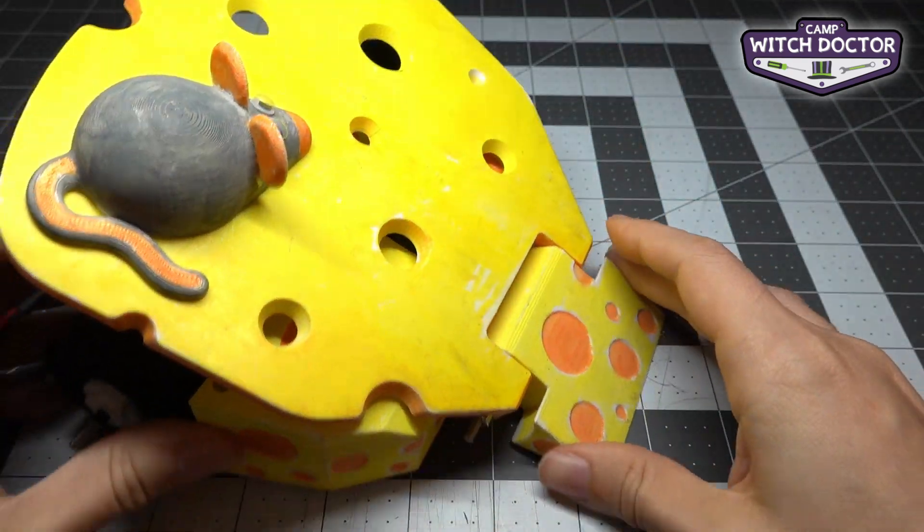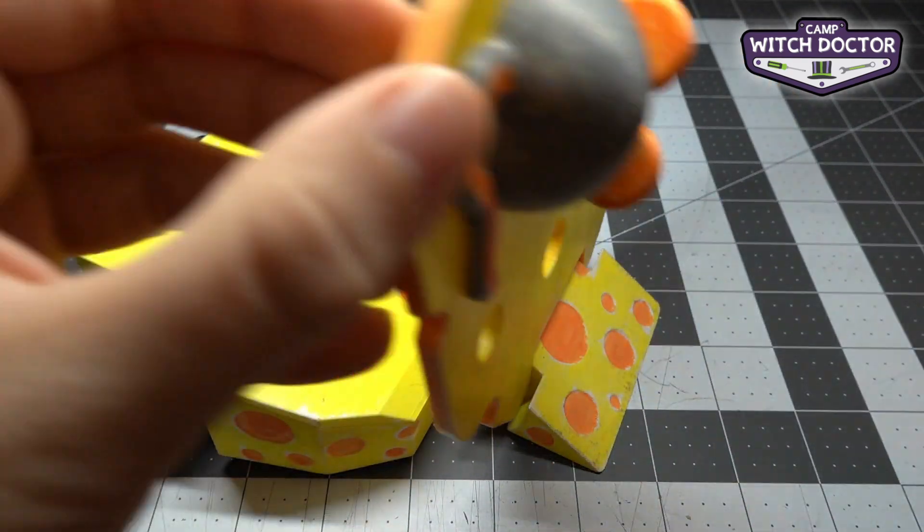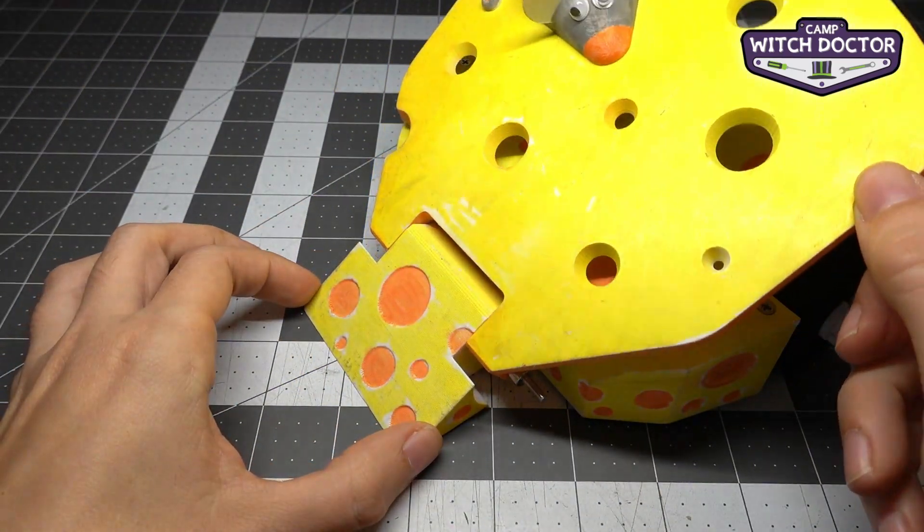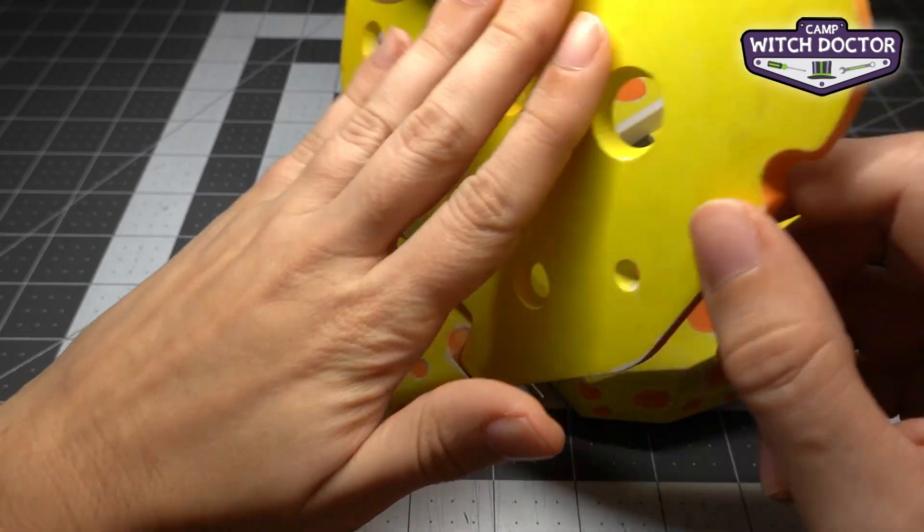I'm going to tighten that and then I'm going to check to make sure that this slides freely, which it does. So you can see it's already starting to look like a flipper. When another robot drives up on here you'll be able to flip them off.